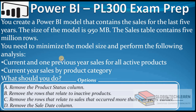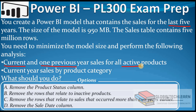Let's understand the question first. We have a Power BI model of approximately 950 MB with the last 5 years of data, and our goal is to reduce the model size while achieving two analyses. The first analysis requires current and one previous year of data, meaning we need the latest two years in the model, and it should contain active products — so we need the product status column. The second analysis is current year sales by product category, so we need the product category column as well.